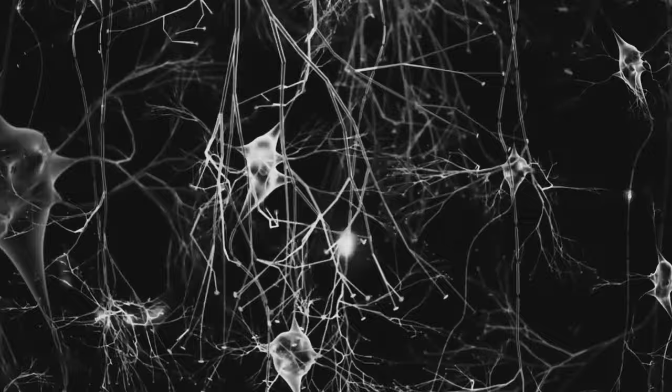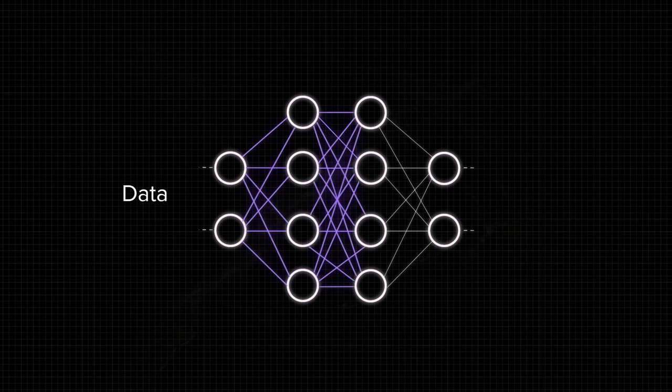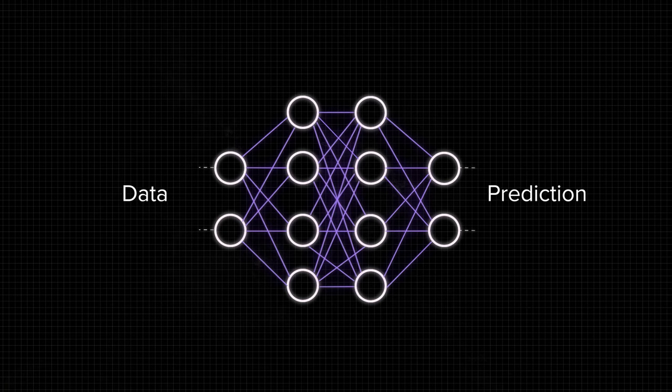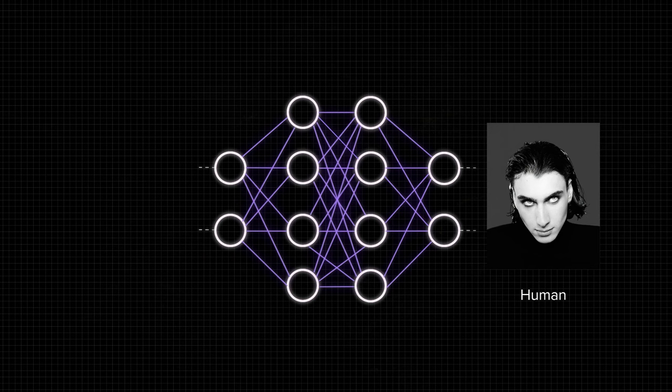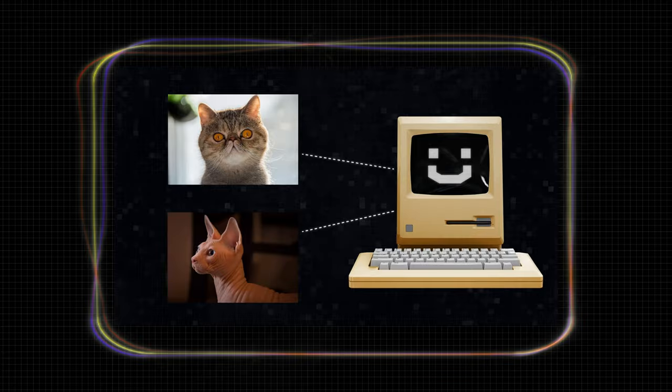Just as human brains receive signals about the world, artificial neural networks receive data. After passing this data through many of its layers, the network can make a prediction about what that data is. But to be able to recognize, say, that there's a human depicted in a photo, a neural network must first be trained on many images of human faces.